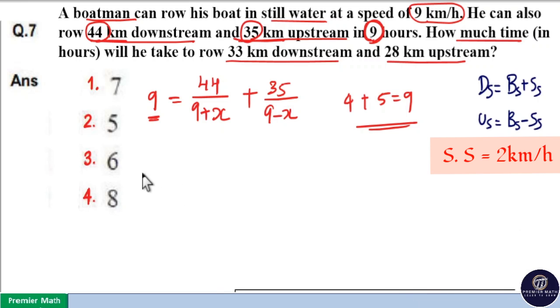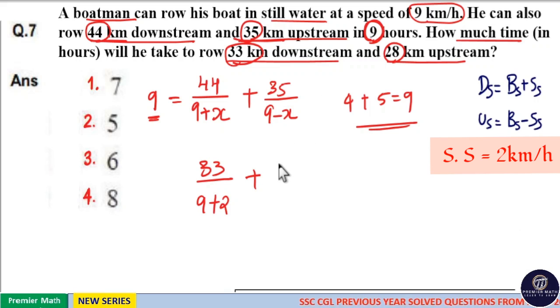So we need to find how much time to row 33 km downstream and 28 km upstream. 33 divided by 9 plus 2, plus 28 divided by 9 minus 2. 9 plus 2 is 11. 11 goes 3 times in 33. 7 goes 4 times in 28. So total 7 hours.